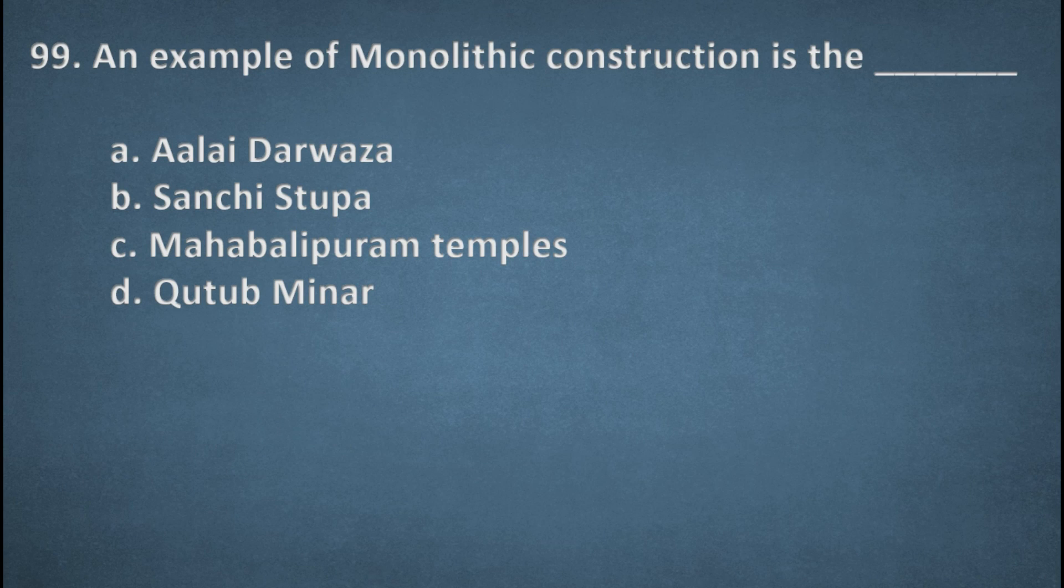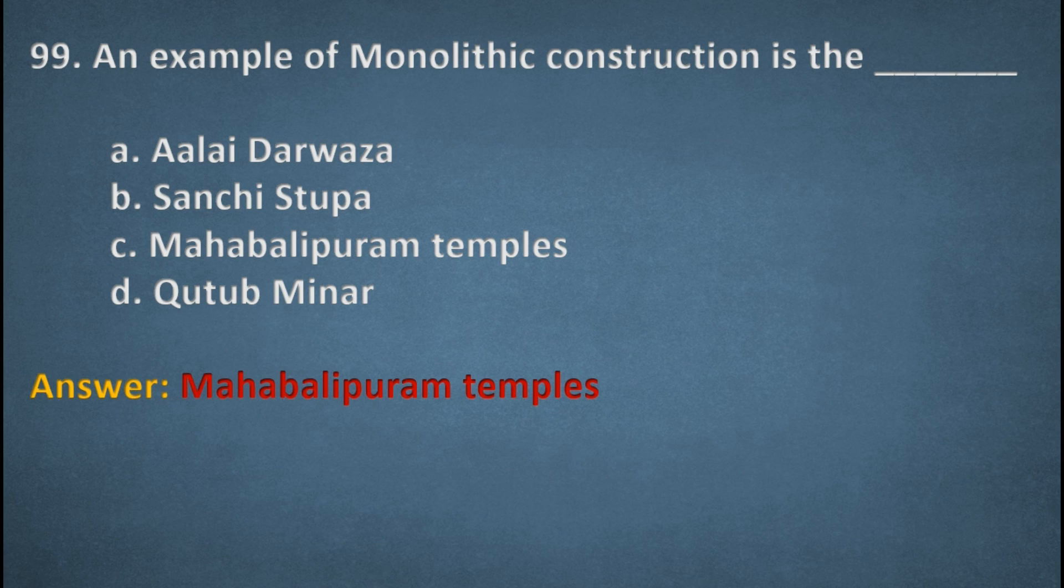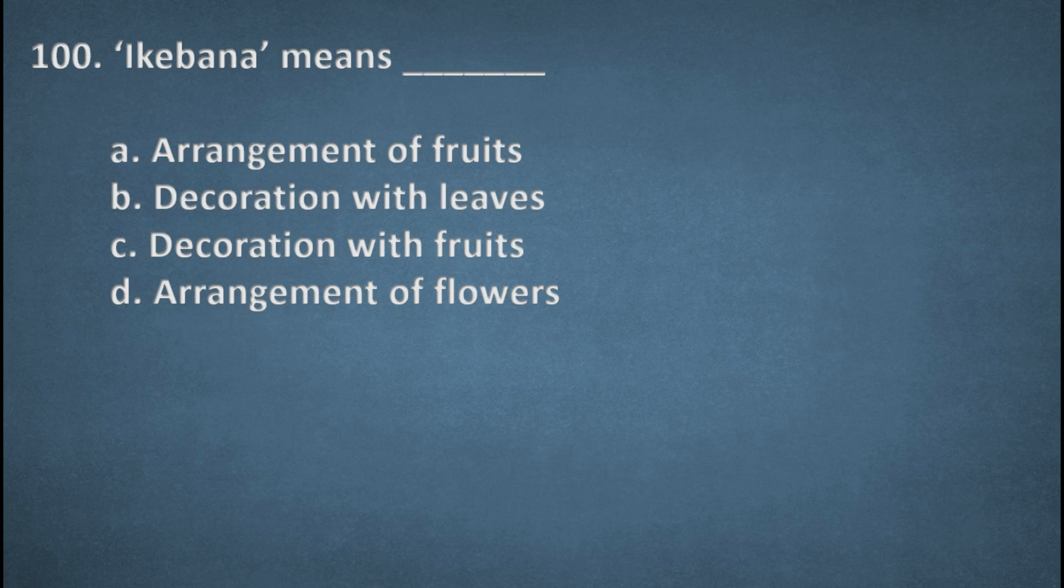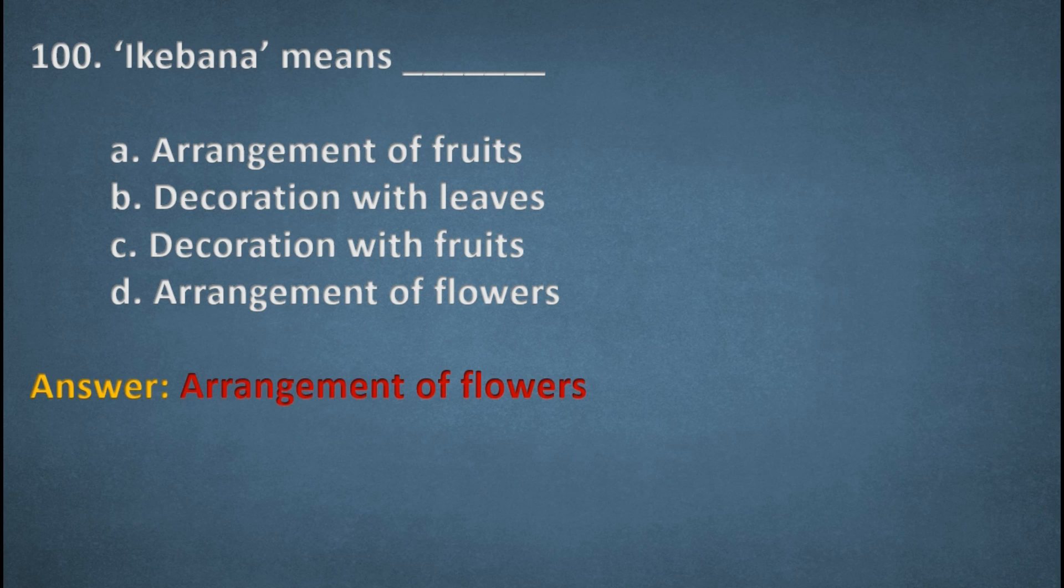Next one. An example of monolithic construction is the options: Alai Darwaza, Sanchi Stupa, Mahabalipuram's temples, Qutub Minar. The right option, C, Mahabalipuram temples. Next one. Ikebana means. Options: Arrangement of fruits, Decoration with leaves, Decoration with fruits, Arrangement of flowers. The right option, D, Arrangement of flowers.